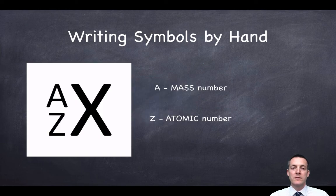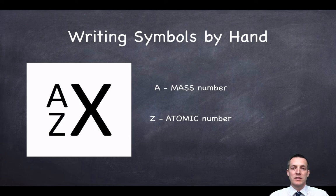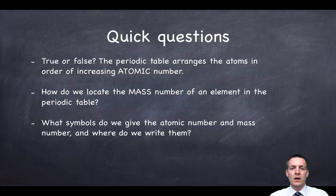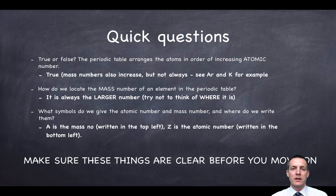Here's what we can say about those two numbers, and we're also introducing symbols for them. The mass number is given the symbol A, and the atomic number is given the symbol Z. These symbols don't really make a lot of sense, but there they are. Here are a couple of quick questions — hopefully you've had a chance to stop and check your understanding, and to go back if anything didn't make sense.